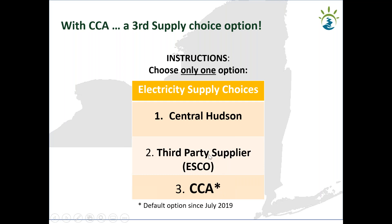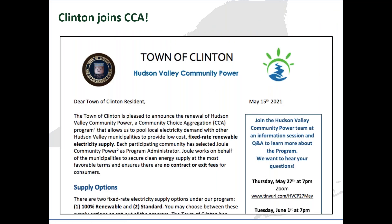That brings us to CCA, which is a new default option. It acts as a third party — in 2019 it was Direct Energy, and I'll show you who your new supplier will be for this round. Those are basically the three options you can have for electricity supply.